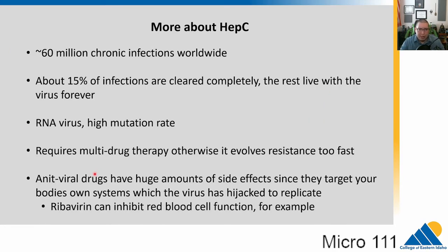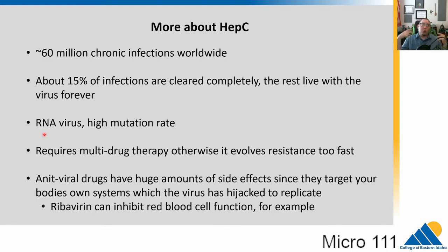Hepatitis C is a chronic issue worldwide — 60 million people are chronically infected. About 15% of infected people will completely clear the virus and live virus-free; that means 85% will not. This is partly about viral load and immune system strength, and partly luck. Because it's an RNA virus, it generally has a higher mutation rate than DNA viruses. To treat it, we use multi-drug therapies — giving two or three drugs at the same time to keep its ability to evolve resistance lower. If you give one drug, most viruses can evolve resistance very quickly; with two or three drugs, the chance of evolving resistance to all simultaneously is much lower.